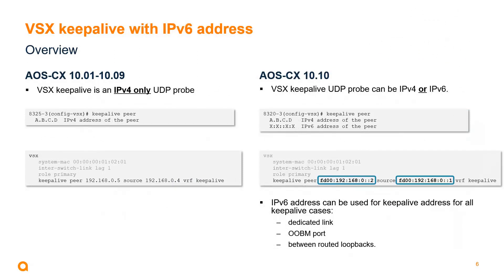For IPv6 support, it is much the same as IPv4. Before, only IPv4 was supported. Now it can be either IPv4 or IPv6 — it cannot be dual-stack, so it must be selected beforehand. That IPv6 address is supported on a dedicated port, the routed path, or the out-of-band management port.